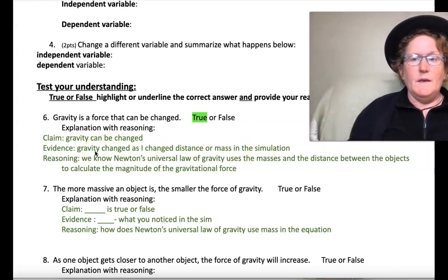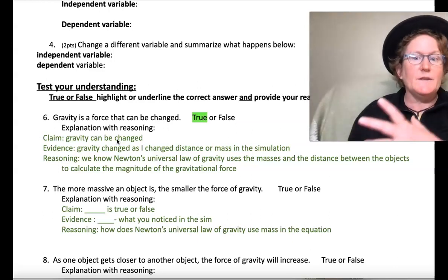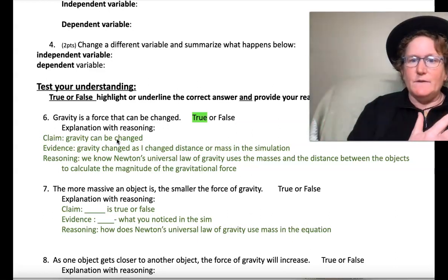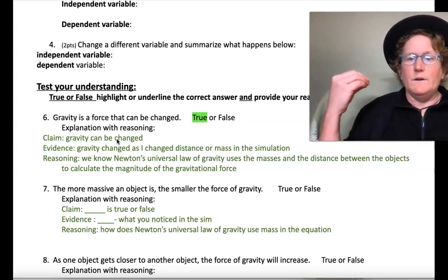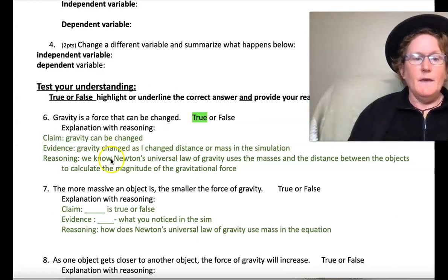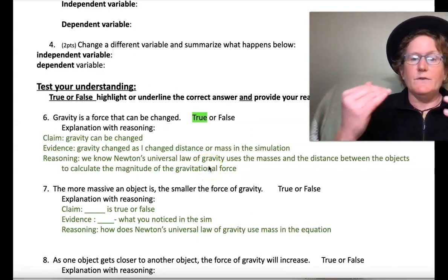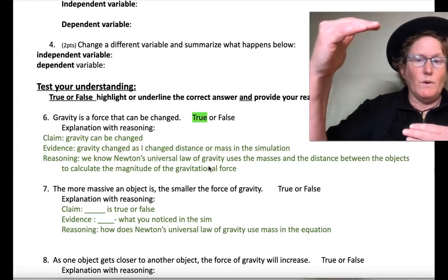Like you might make a claim, say, the best video game is whatever you play. And then you would have some evidence like it has the most players or there's the most active player community. Or you could have evidence there's a constant, the game is constantly evolving. They're coming up with new problems. So if you made a claim to a friend, you might back it up with some evidence. And then reasoning, we know that Newton's universal law of gravity uses the masses and the distance between the objects. So that's our reasoning. That shows why the evidence supports the claim.